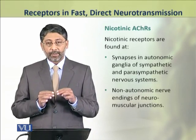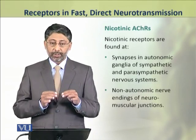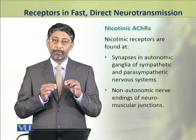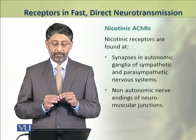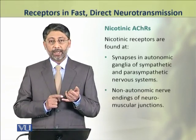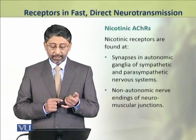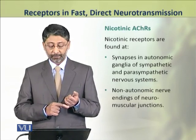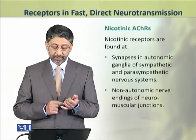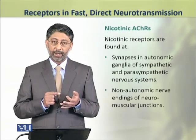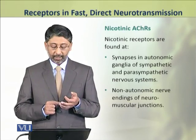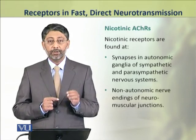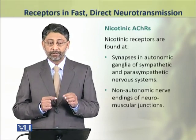Nicotinic receptors are found on two types of cells or at two types of synapses. First, in the synapses in the autonomic ganglia of the sympathetic and parasympathetic nervous system. Secondly, they are present at the non-autonomic nerve endings of neuromuscular junctions.